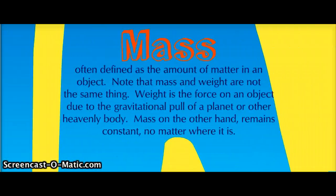Mass can be defined as the amount of matter in an object. Note that mass and weight are not the same thing. Weight is the force of an object due to the gravitational pull of a planet or other heavenly body. Mass, on the other hand, remains constant no matter where it is.